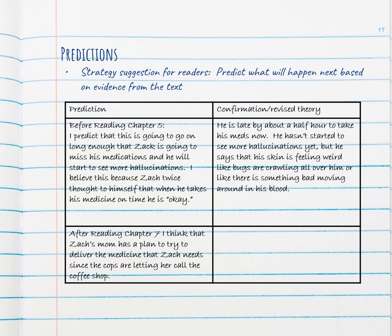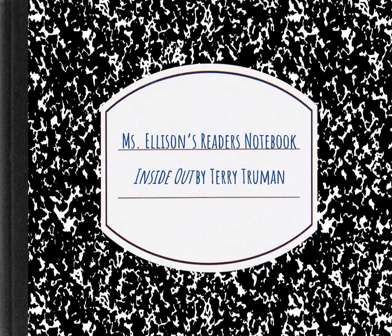After reading chapter seven, I have a new prediction. I think that Zach's mom has a plan to try and deliver the medicine that Zach needs since the cops are letting her call the coffee shop. I feel like they wouldn't let her call unless they were going to let her try and do something to make the situation better for everyone inside the shop.